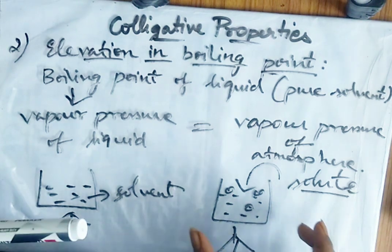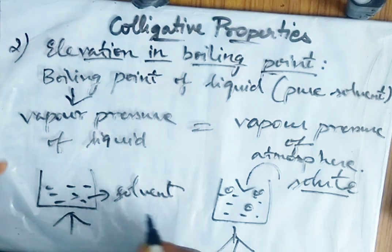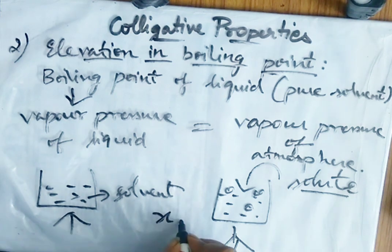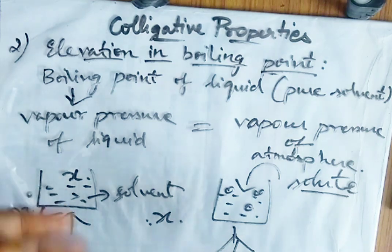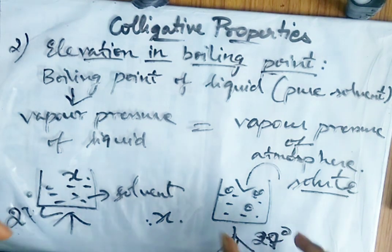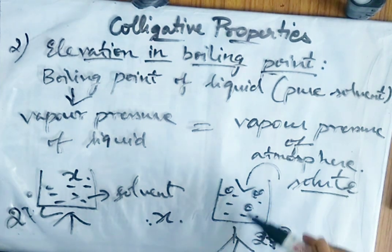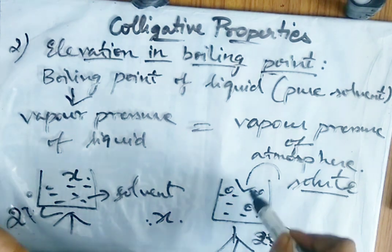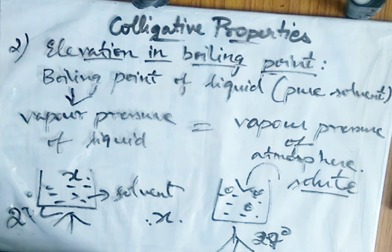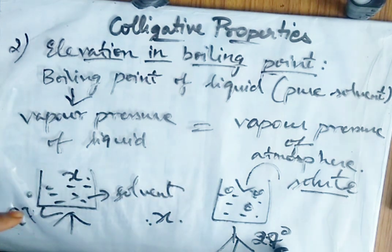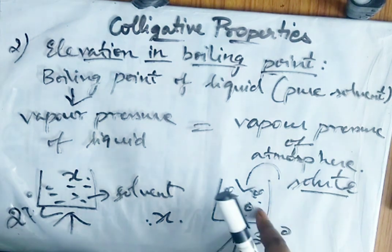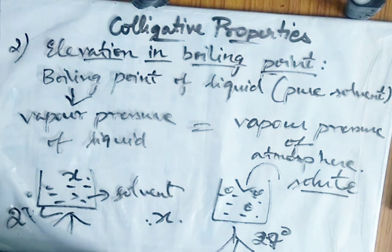Because of this vapor pressure lowering, the boiling point increases. For example, at 25°C the pure solvent's vapor pressure may equal atmospheric pressure. But after adding solute, the vapor pressure is lower at that same temperature, so we need to increase the temperature further until the solution's vapor pressure equals atmospheric pressure. This increase in boiling point is called elevation of boiling point.